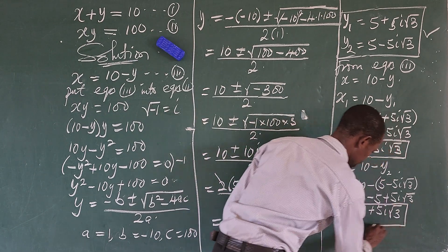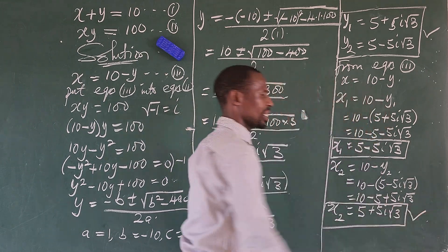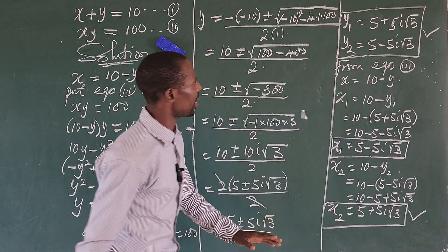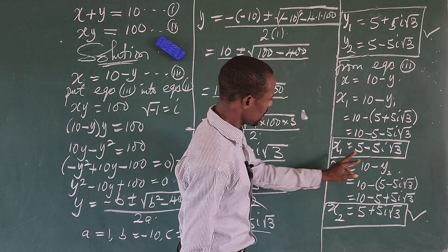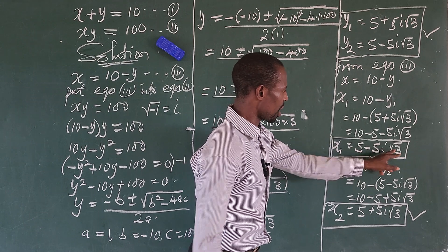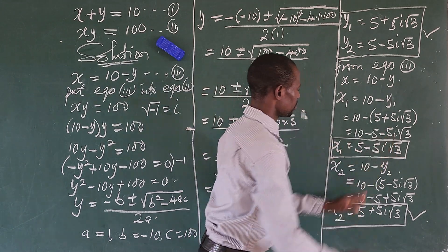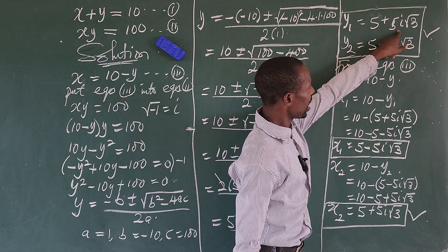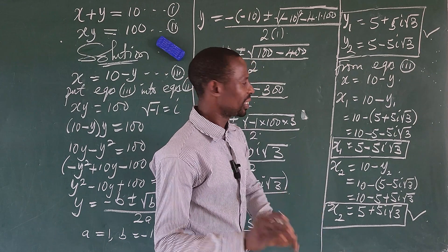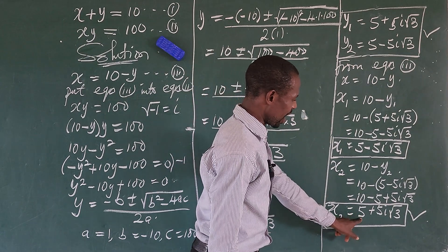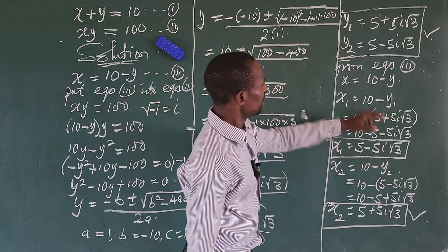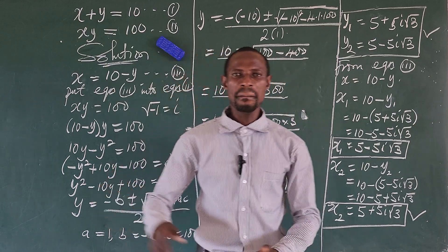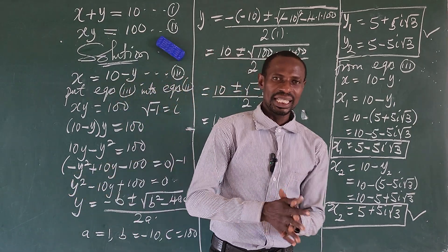Looking at our two solution pairs: x1 equals 5 minus 5 iota root 3 paired with y1 equals 5 plus 5 iota root 3 — these are conjugates. And x2 equals 5 plus 5 iota root 3 paired with y2 equals 5 minus 5 iota root 3. These are the two pairs of solutions that satisfy the original equations.